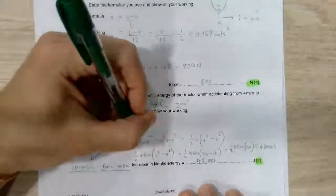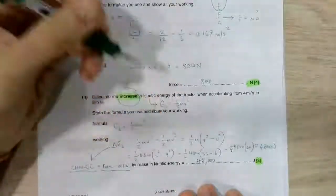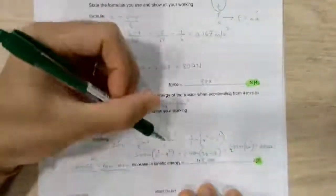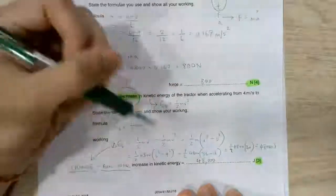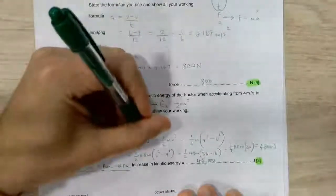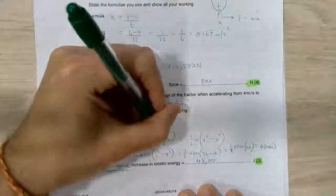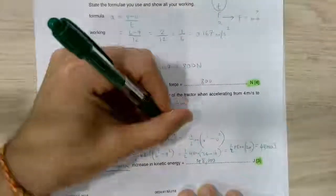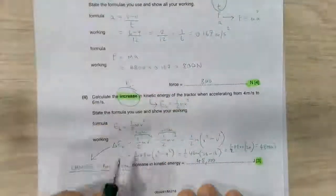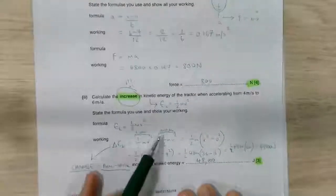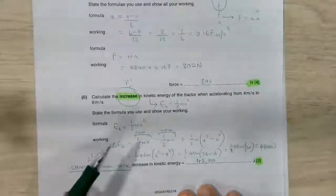Well, in order to do that, I need to know half MV squared, which is simply the kinetic energy at the end, and half MU squared, which is the kinetic energy at the beginning. So this is our final and this is our initial and take them away. That would absolutely be fine.